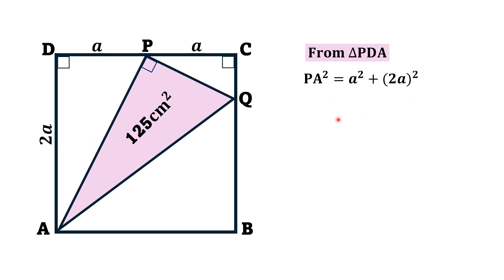If we simplify, we will get a square plus 4a square. And thus, PA square is equal to 5a square. And if we find PA by taking square root on both sides, we will get PA as equal to a square root of 5.